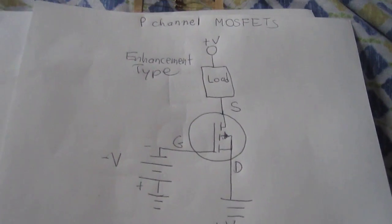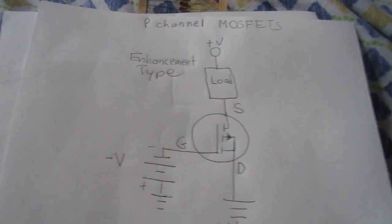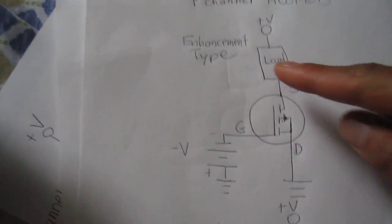This is a quick video on how to bias p-channel MOSFETs. There are two types of p-channel MOSFETs: enhancement type and depletion type p-channel MOSFETs.